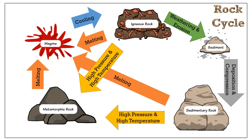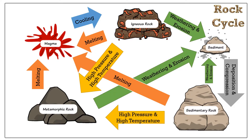Finally, as magma gets pushed towards the surface or erupted through a volcano, it will cool and return to igneous rocks. Under certain special circumstances such as earthquakes, metamorphic rocks and sedimentary rock can actually get pushed towards the surface before they melt into magma. At that moment, those rocks can suffer through weathering and erosion, change into sediment, and then form sedimentary rock again.